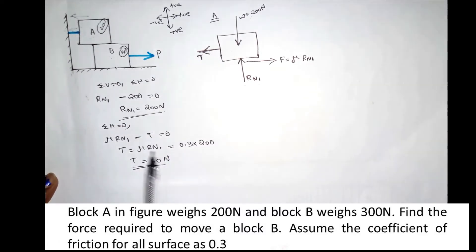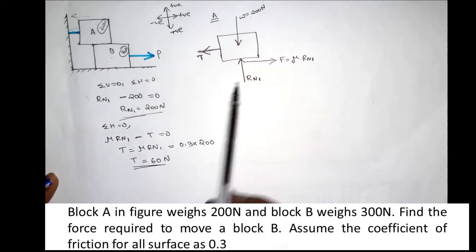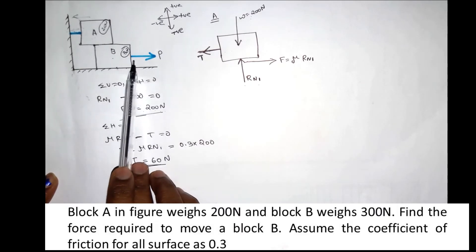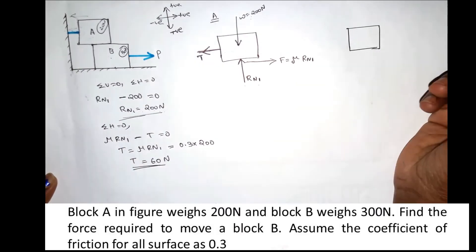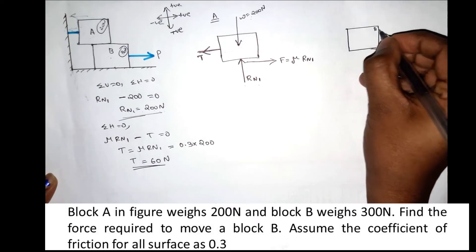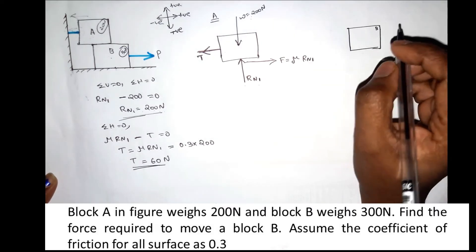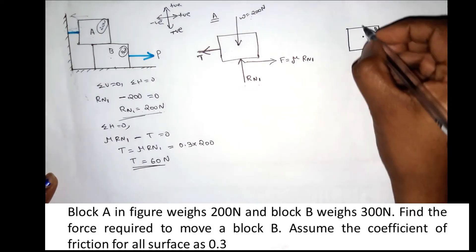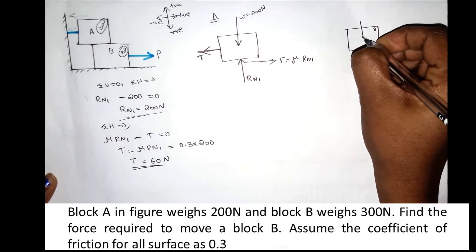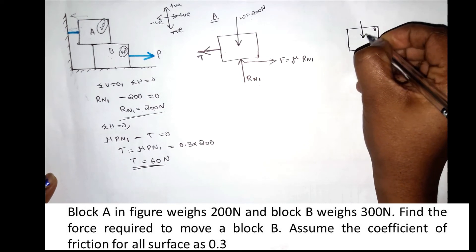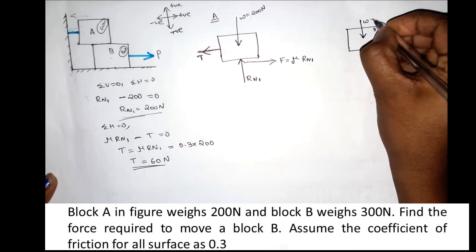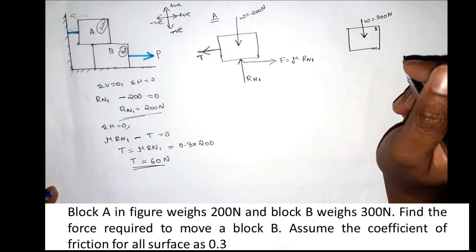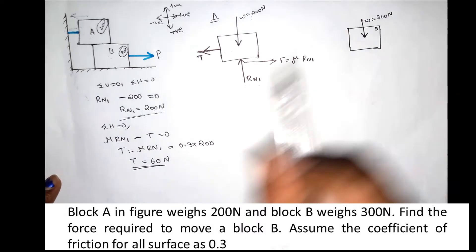Substituting Rn1 equals 200, the tensile force T equals 60N. Now we move on and apply the free body diagram to Block B.